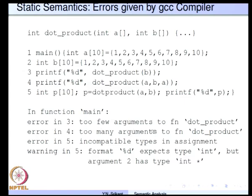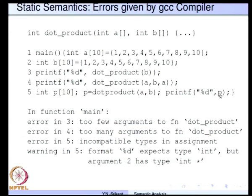Statement 3: too few arguments to function dot product — it requires 2, but we have given only 1. The semantic analyzer in the compiler caught the error. Statement 4: too many arguments to function dot product — it requires 2 but we have provided 3. Statement 5: incompatible types in assignment — p equals dot product, but p is an array whereas dot product returns an integer, so the types do not match on both sides. Statement 5 also generates a warning: format '%d' expects type int, but argument 2 has type int star, because p is an array and is considered as type int star.